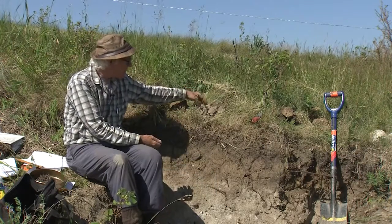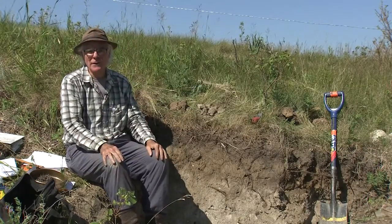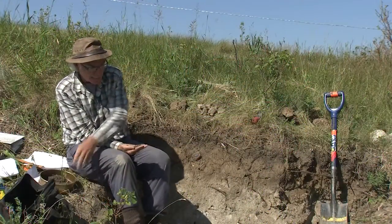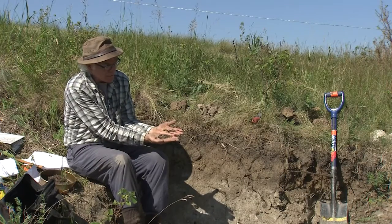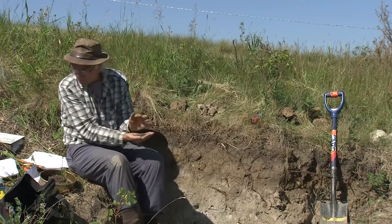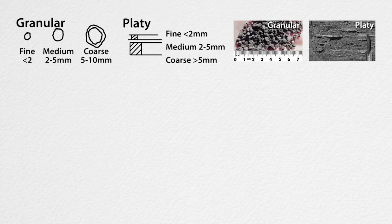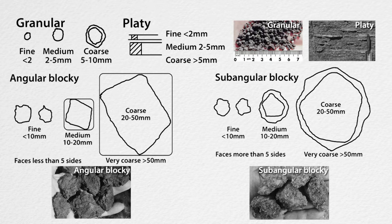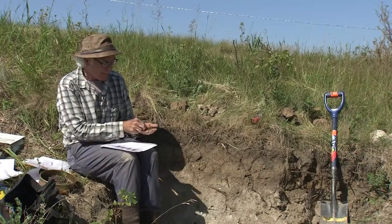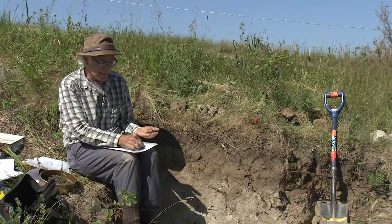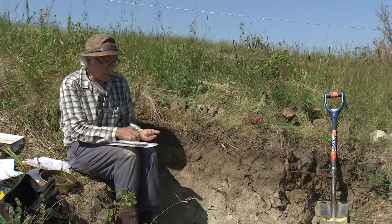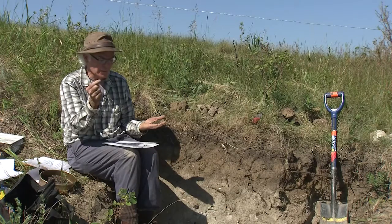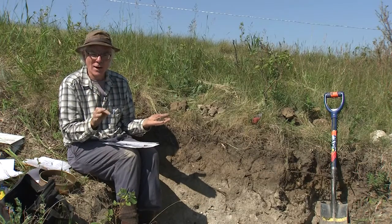The next step is to look at the kind, the shape of the structure, and the size. For the A horizon at this site, the structural units are relatively small. I can use charts in section 3.8 of the field guide to compare the size of these structural units. The A horizon heads are relatively small, they're granular with many faces, and they would be medium to coarse granular structure.